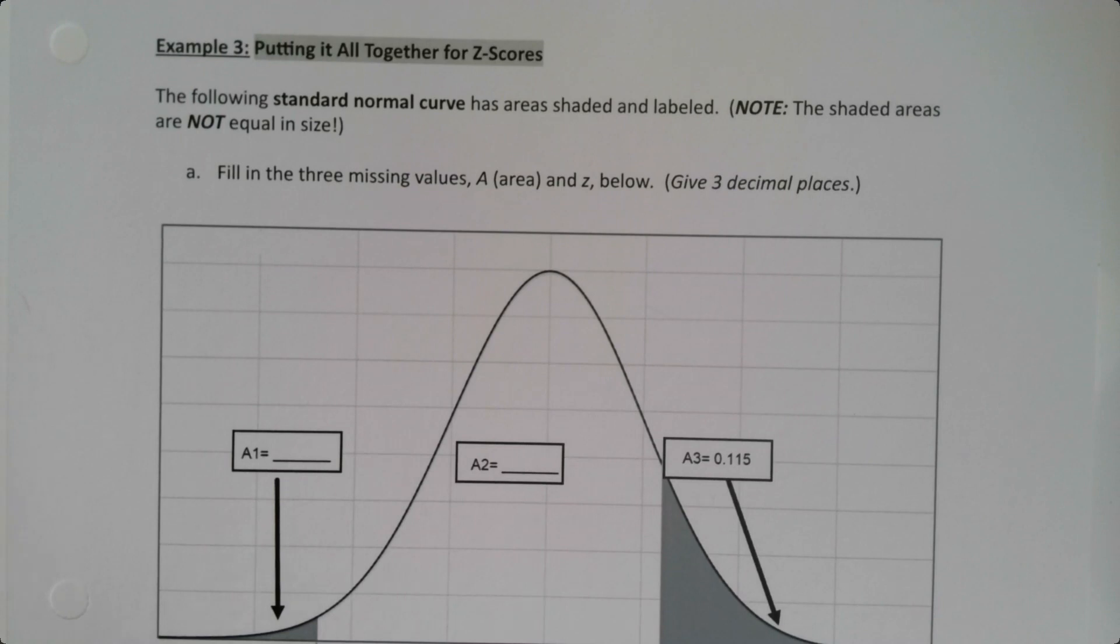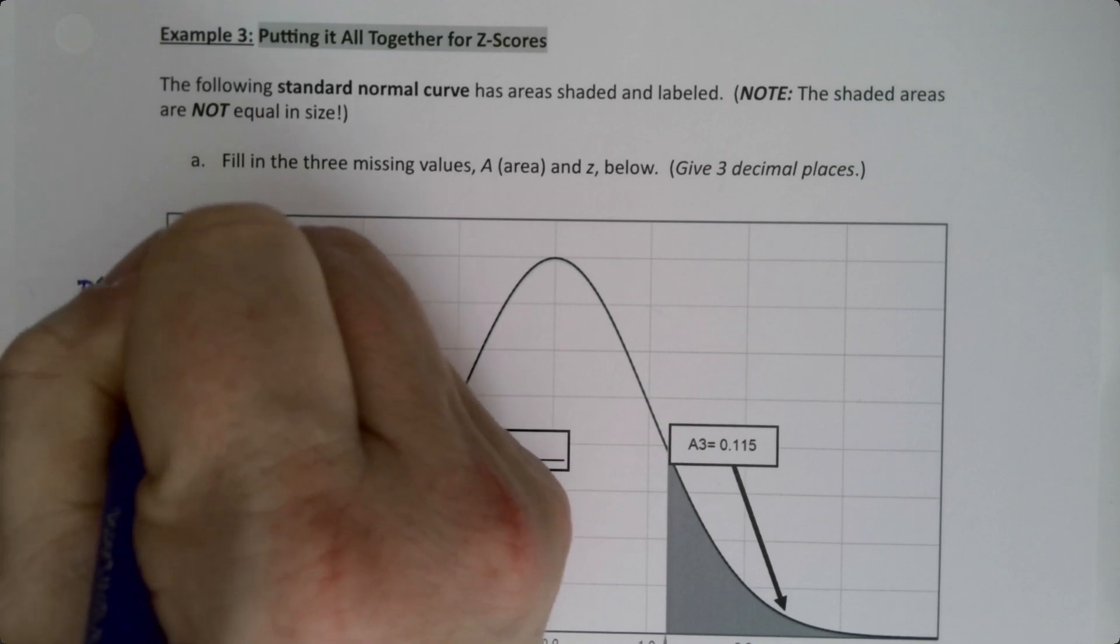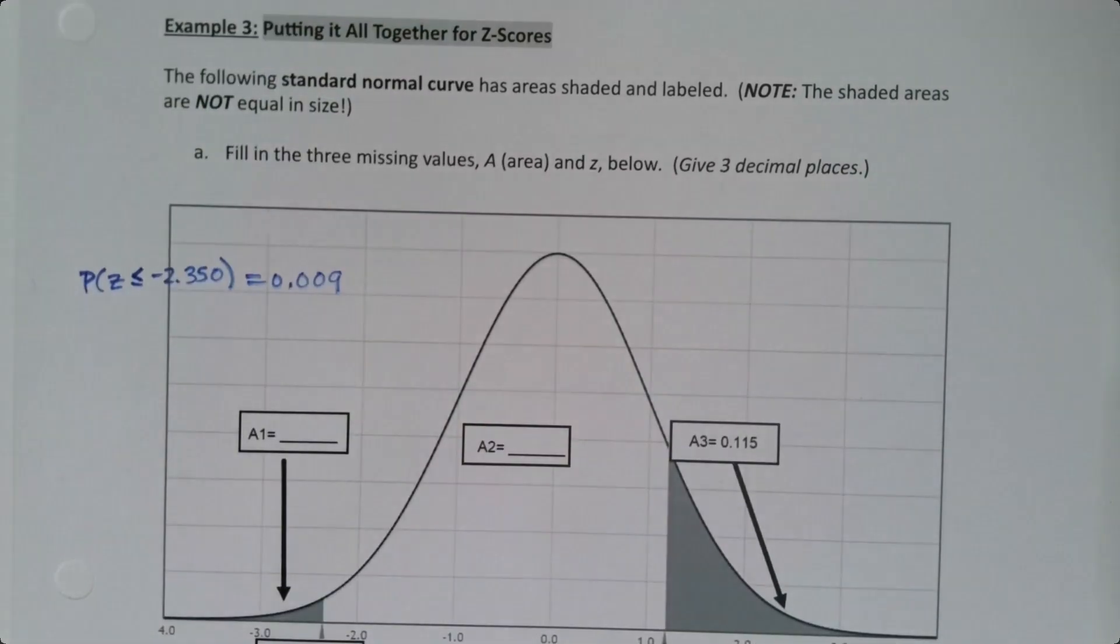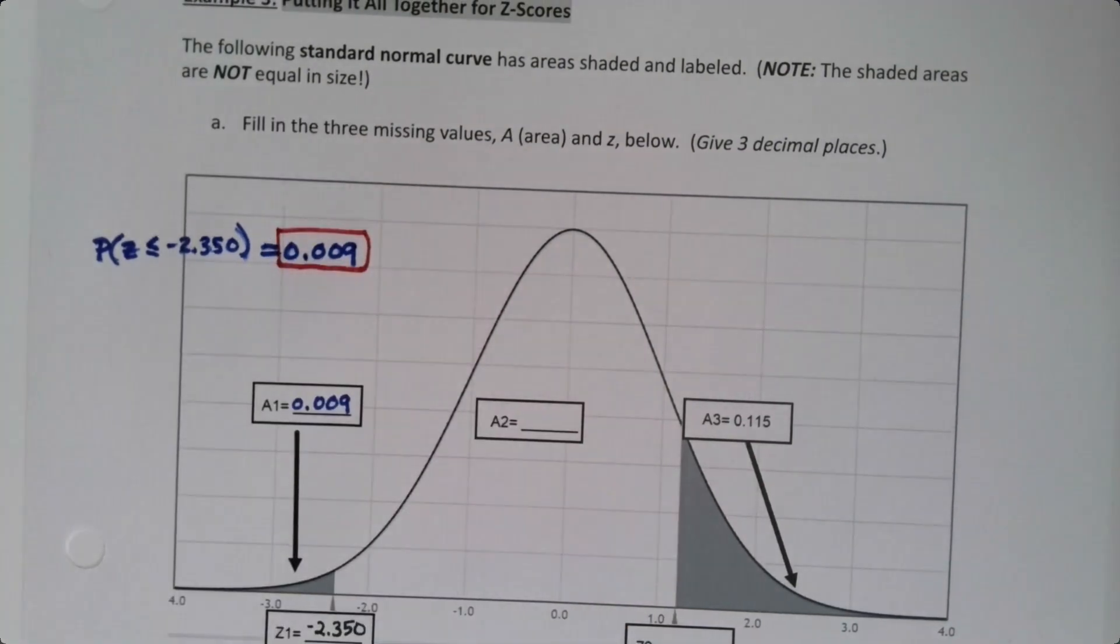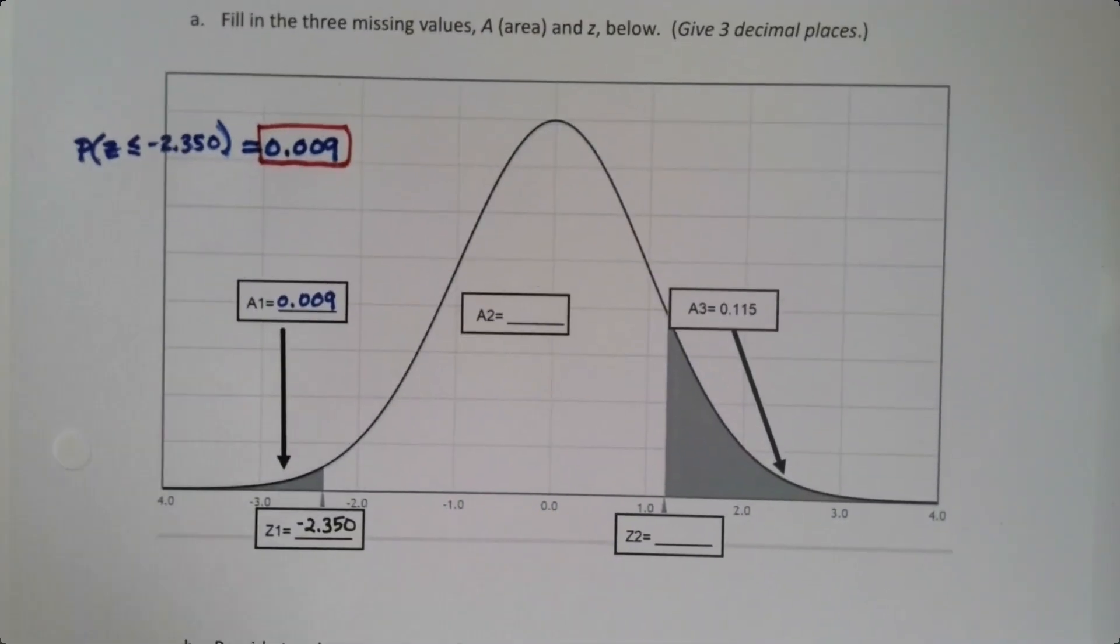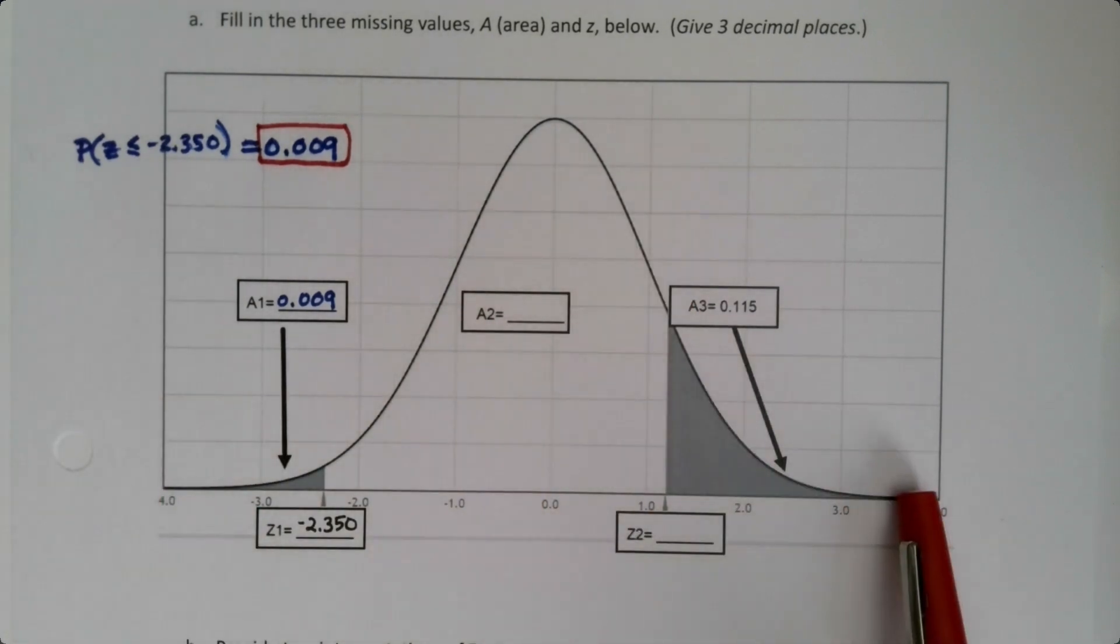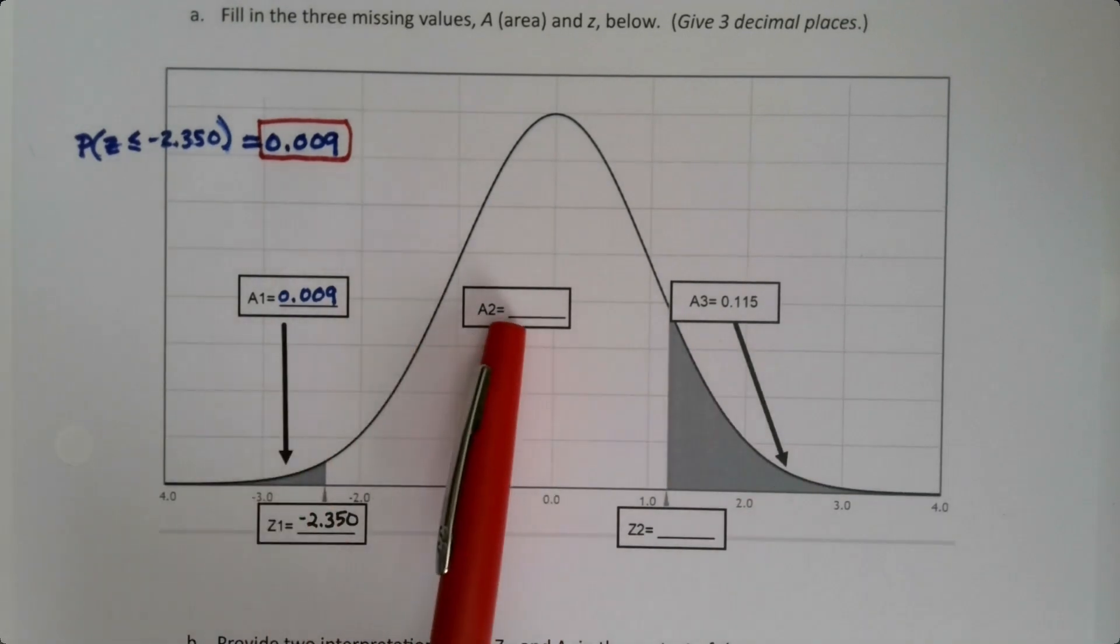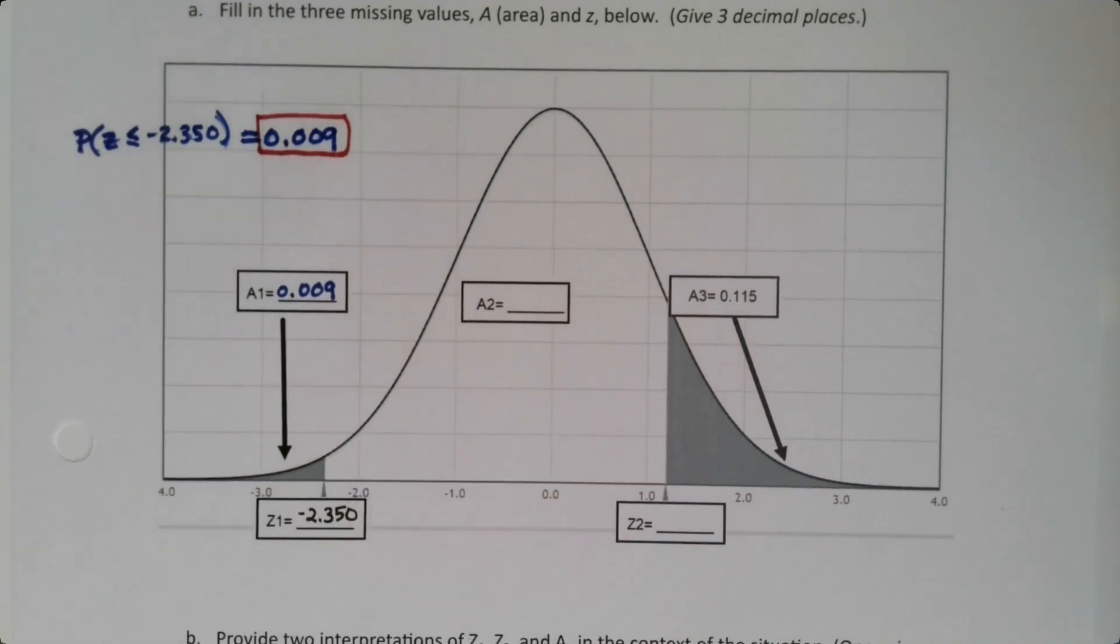Okay, so the probability that Z is less than or equal to negative 2.350 is 0.009. Sorry, my pen is dying, I have to grab a new pen. There it is. And this was the answer. Okay, so now we have a choice. We can find the middle area pretty easily, because remember that this is a normal curve, it's a probability curve. So the area underneath this normal curve is 1, because probabilities have to sum up to 1. So that means that I could find this middle area by just adding up the two areas that I know and taking it away from 1. So that's what I'm going to do.